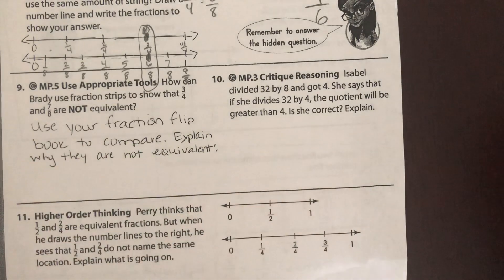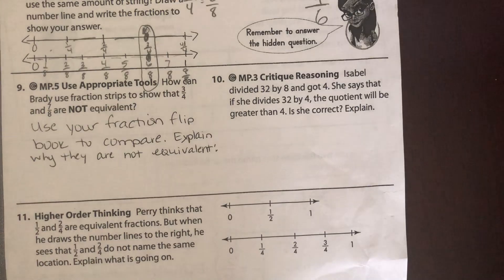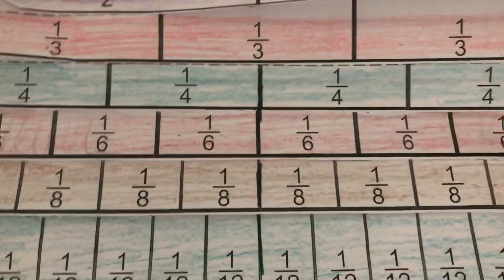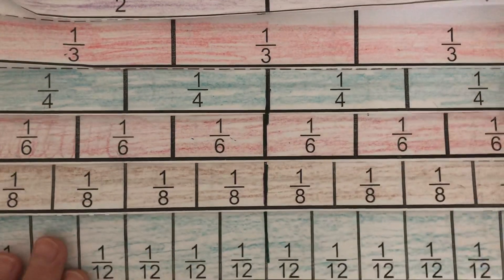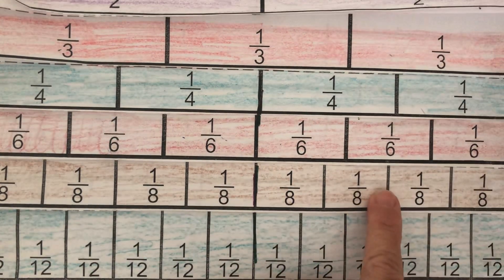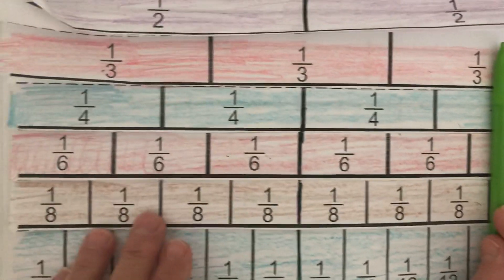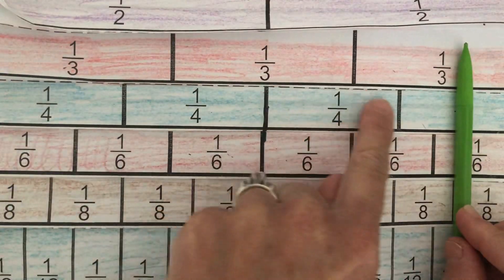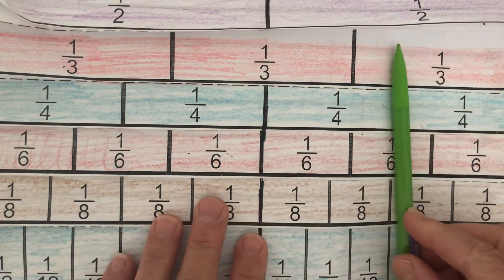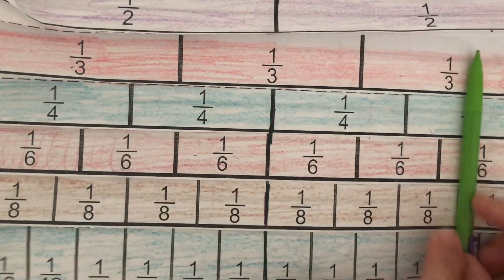All right, use your fraction flip book. So how can he use fraction strips, which these are fraction strips, to show that 3-4ths and 7-8ths are not equivalent. So let's look at 7-8ths. 1, 2, 3, 4, 5, 6, 7. Here's 7-8ths right here. Okay, and 3-4ths. 1, 2, 3 ends right here. So 3-4ths ends here, 7-8ths ends there. Are they the same? No. One ends here, one ends here. Okay, so 7-8ths is actually longer.